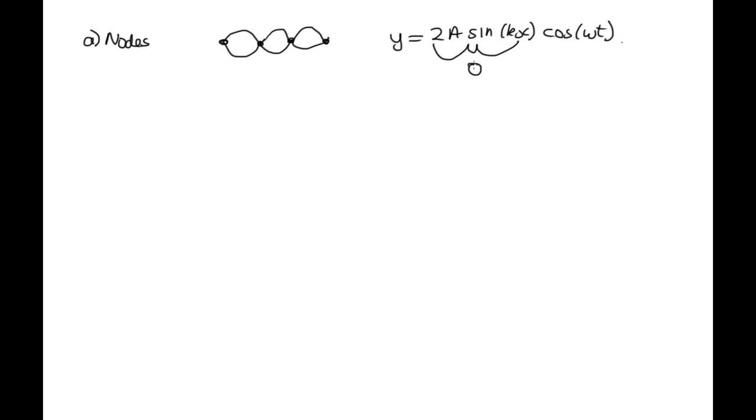The amplitude for the incoming waves can't be zero. Otherwise, we wouldn't have a wave. So what we actually need is that sin(kx) is equal to zero.